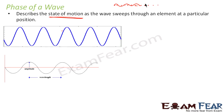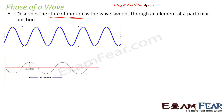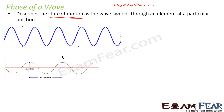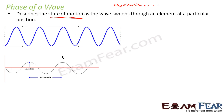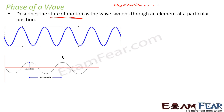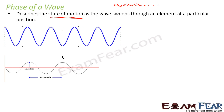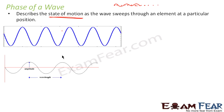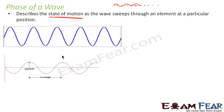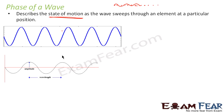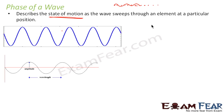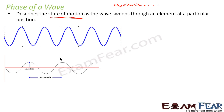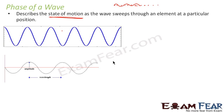Let us consider this wave, which is propagating along the positive x-axis. Phase will basically describe the location within one cycle of a periodic wave. In order to keep things simple, let us consider this static wave.